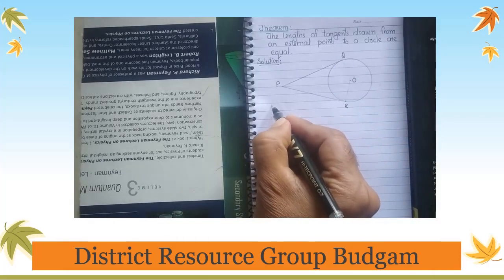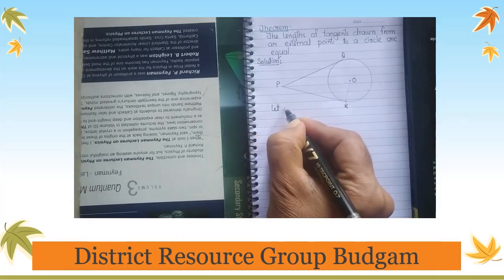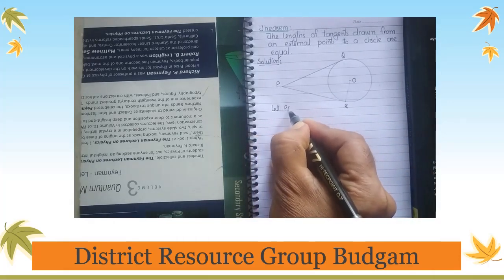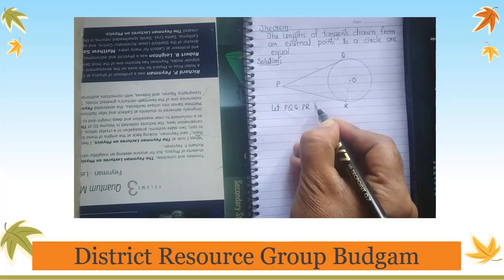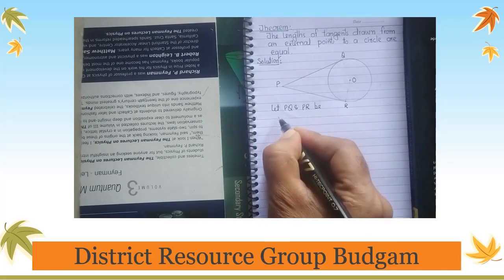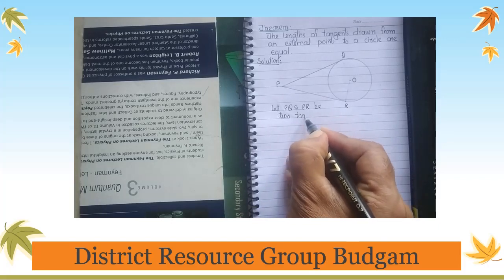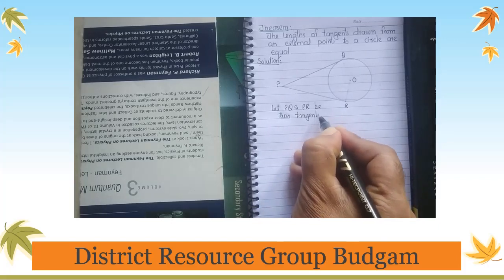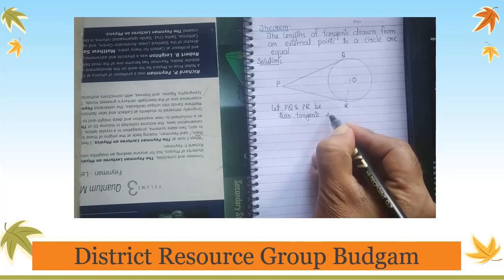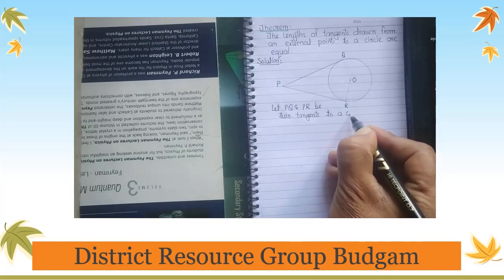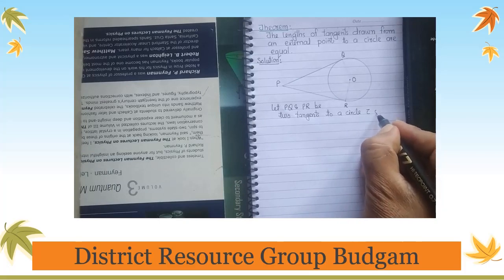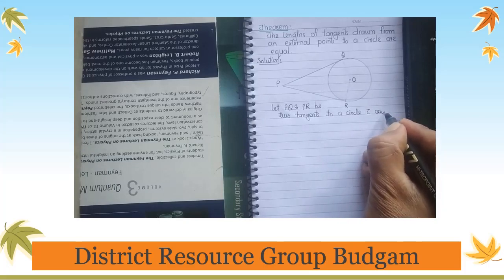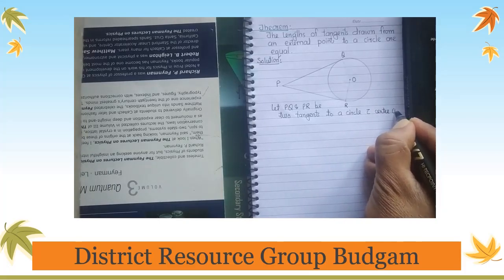Given: Let PQ and PR be two tangents to a circle with center O.